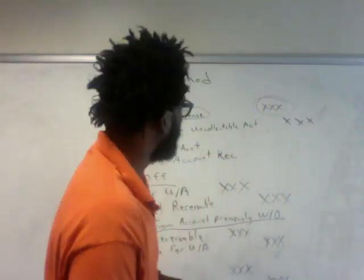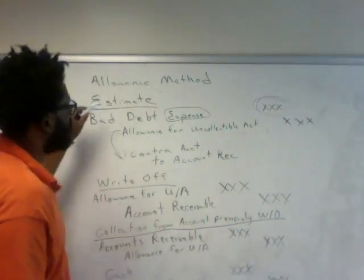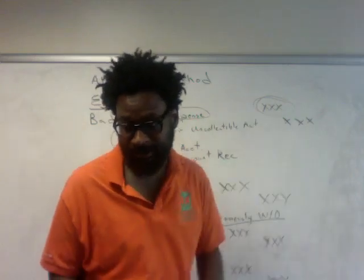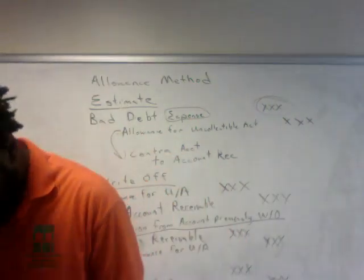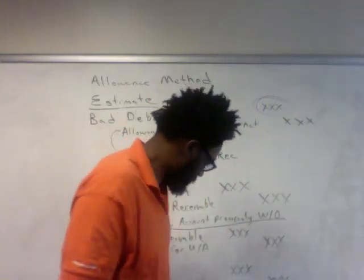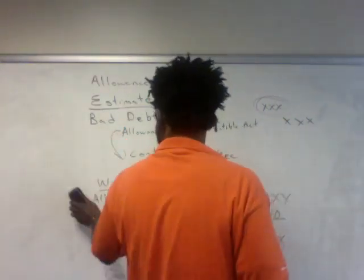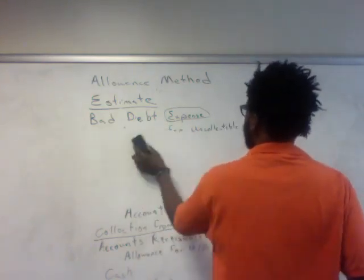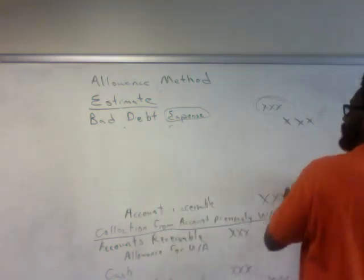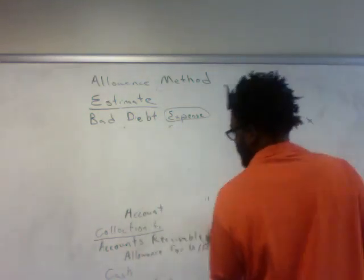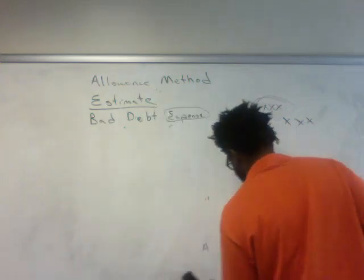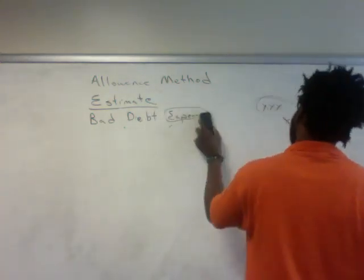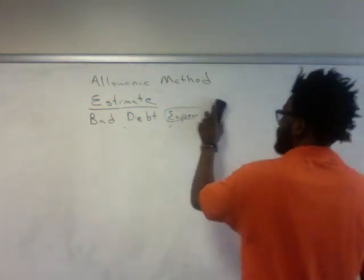As I mentioned, we're going to go back to find out how we put those numbers in there. What you need to remember is that there are two ways in which we can calculate those numbers for the estimate: we have percentage of sales and we have percentage of receivables.